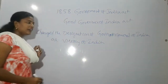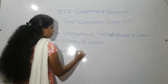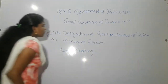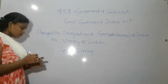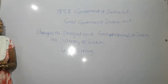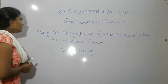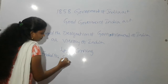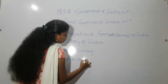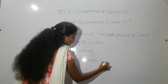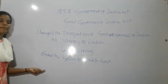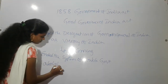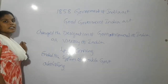The first Viceroy of India was Lord Canning. This 1858 Government of India Act ended the system of double government by abolishing the Court of Directors and the Board of Control.